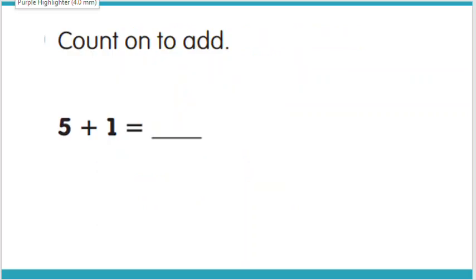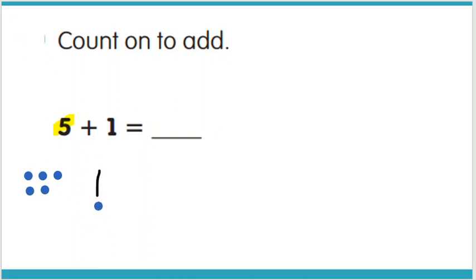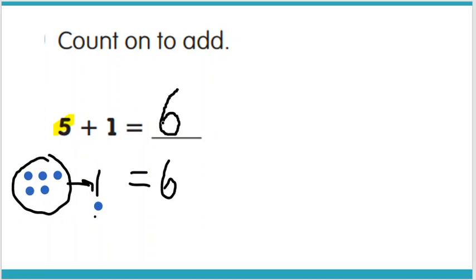Now we have a little bit more challenging one. It says count on to add, but we don't have any pictures or shapes, so we have to create our own. I'm going to go ahead and create some dots. You want to get the bigger number in your mind first, so let's get 5 dots: 1, 2, 3, 4, 5. Now we're going to add one more dot — 5 plus 1. I put 5 in my mind and then count on: 6. So our answer is 6.